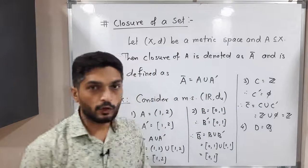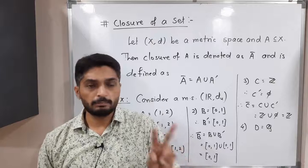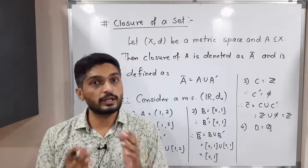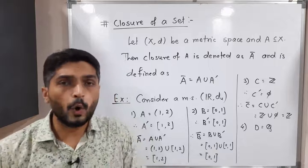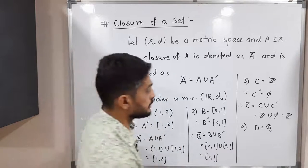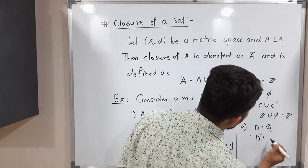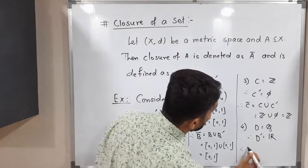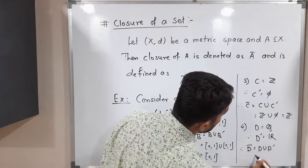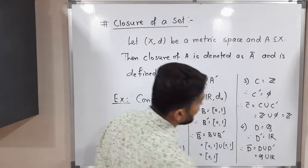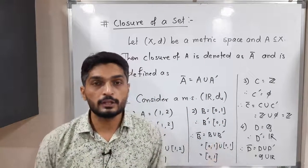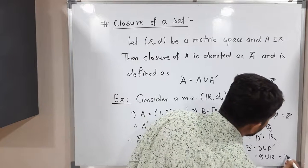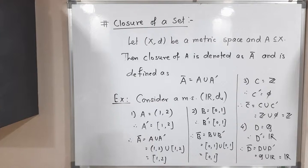One more example: D = ℚ, the set of rational numbers. By the density theorem, between any two rationals there are irrationals and between any two irrationals there are rationals, so all real numbers are limit points of ℚ. Therefore D' = ℝ. So D̄ = D ∪ D' = ℚ ∪ ℝ = ℝ, since ℚ is a subset of ℝ and their union is ℝ. These are the examples we have discussed — make a screenshot of it.